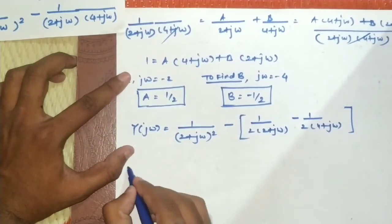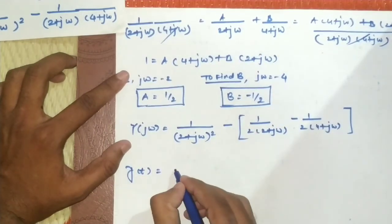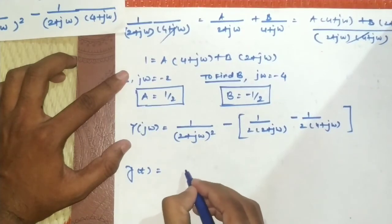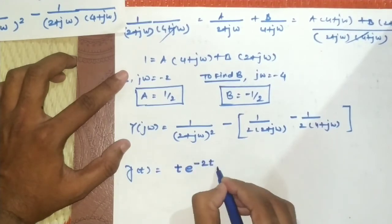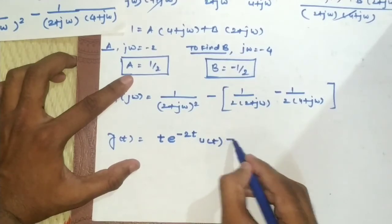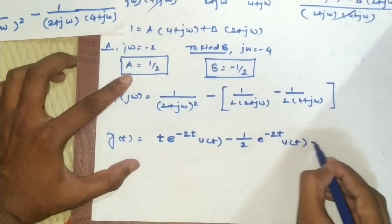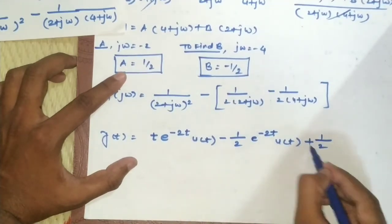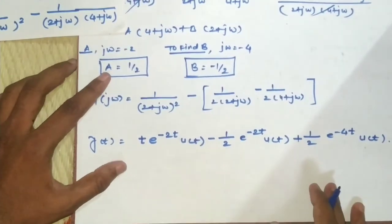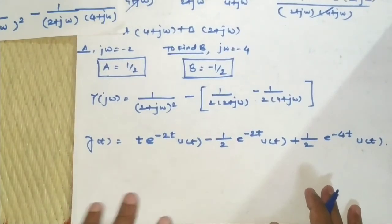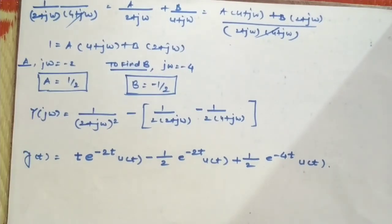Taking the inverse Fourier transform gives y(t). The squared term 1/(2 + jω)² has the inverse t·e^(−2t)·u(t). So the final answer is y(t) = t·e^(−2t)·u(t) − (1/2)·e^(−2t)·u(t) + (1/2)·e^(−4t)·u(t). This is the output response y(t). Such examples have also been solved in a previous video. Thank you.